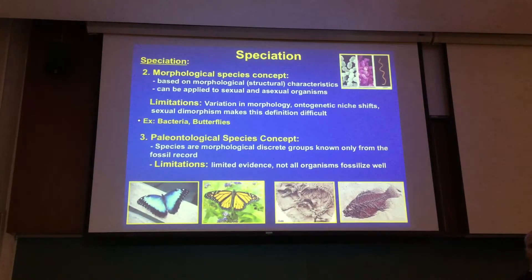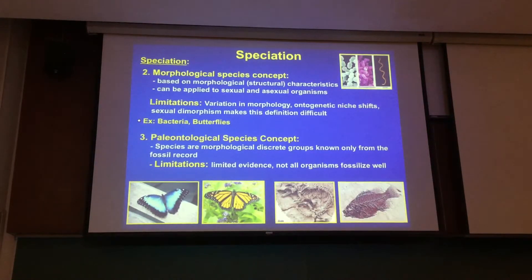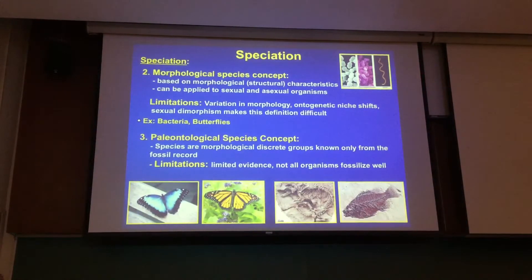It's tough to make a fossil — you don't just drop dead and instantly become one. You have to die in a unique habitat that covers you quickly with sediment, eliminates oxygen, and has the right mineral composition in the soil to replace the bone with a mineral cast. Those conditions are quite rare — swampy regions and the tar pits are examples, as are river systems where you get covered with sediments.